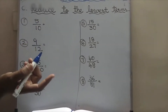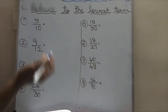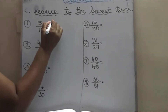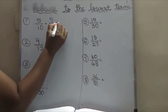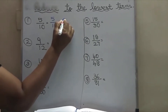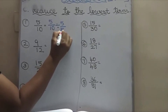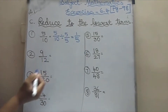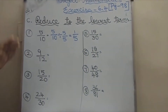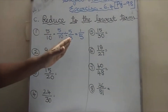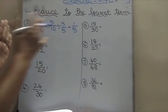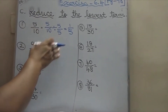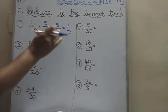5 by 10 — both go in which table? 5 table. 5 by 10 divided by 5 by 5 — what will come? 1 by 5. Children, use black pen for the question and blue pen for the answer so that you can see the difference and find out easily which is question and which is answer.